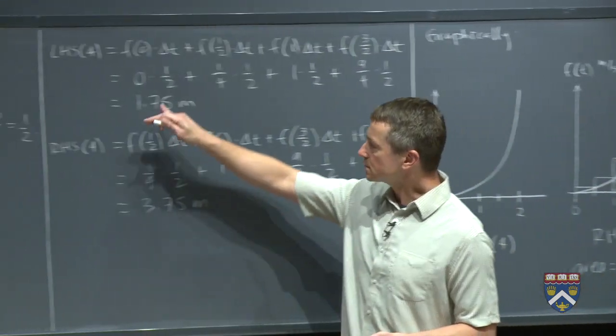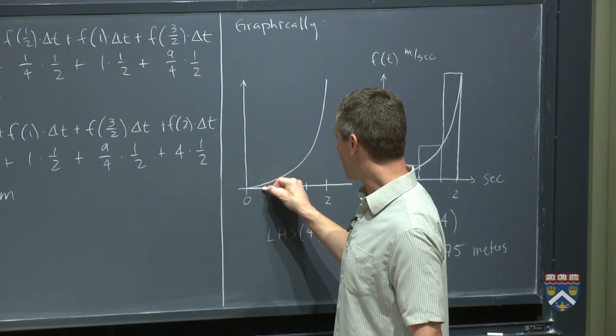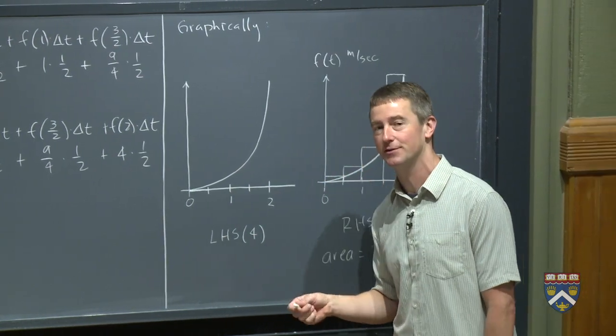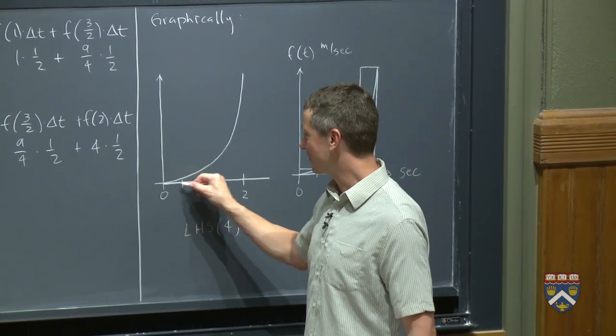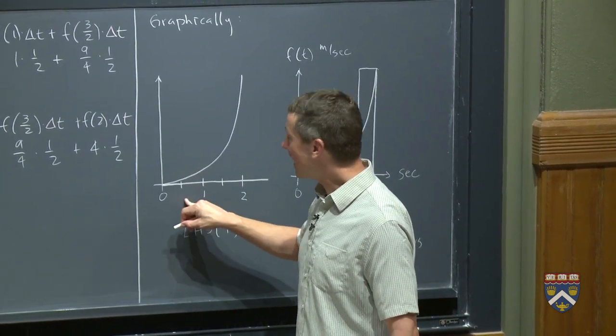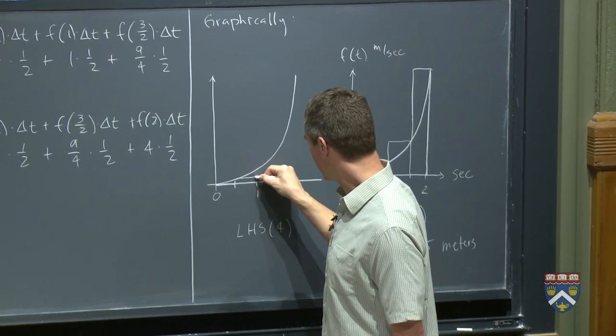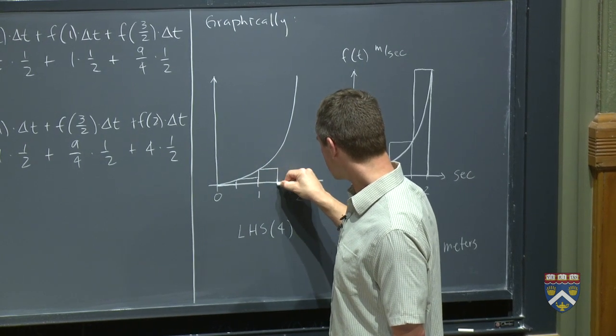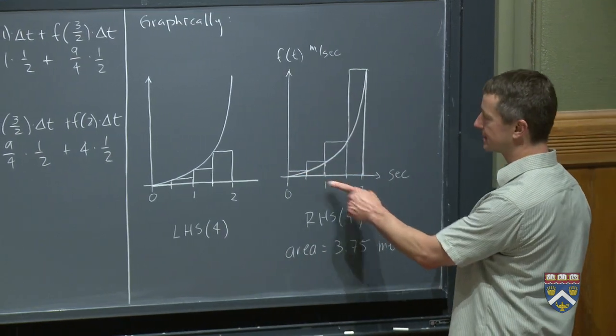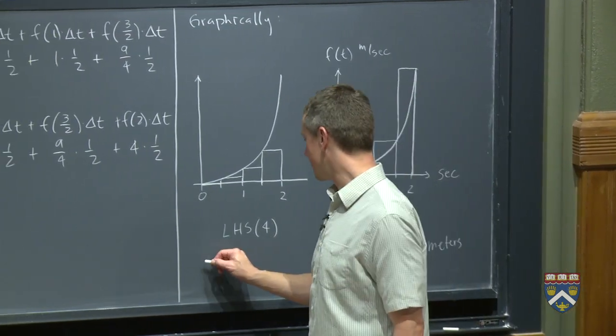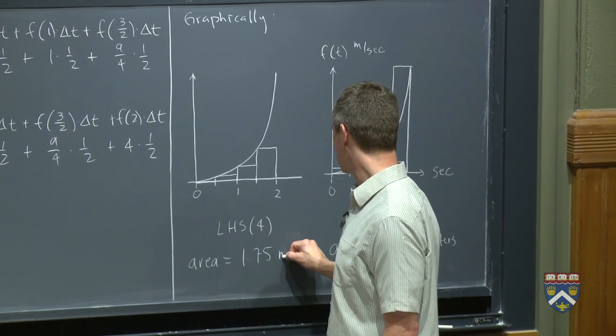In the left-hand sum, the first value that we chose was f of 0. Well, f of 0 was 0. So we're basically drawing a rectangle with no height. Technically, that is a rectangle, it's called a degenerate rectangle is the official math language for that. But hard for me to draw on the board, so I'm just going to draw a horizontal line there. Then at time 1 half, we took the value, which was a quarter, we multiplied it by a half, and we just kept going. So I think graphically, you can start to see why in this case, the right-hand sum is an overestimate, and the left-hand sum is an underestimate. So here the area will be 1.75 meters.